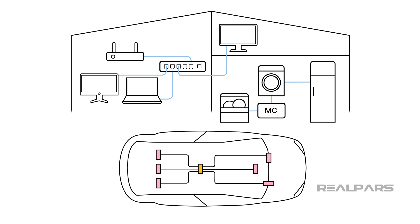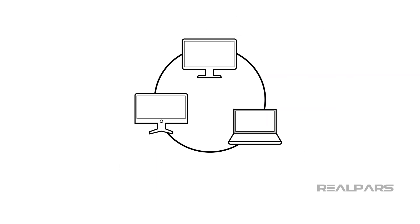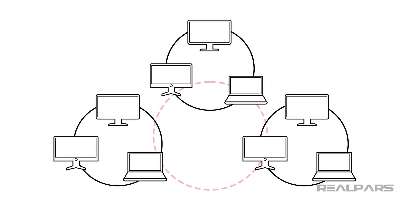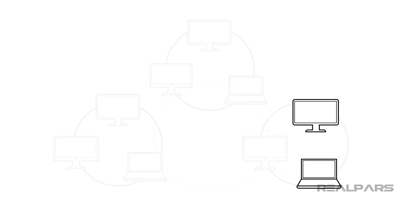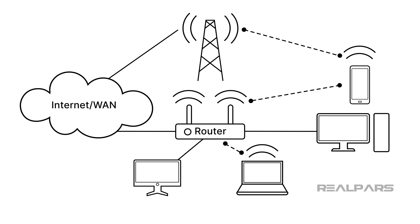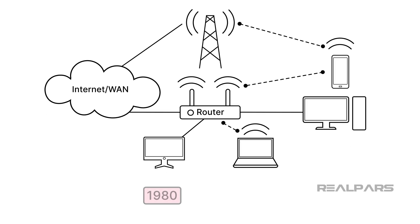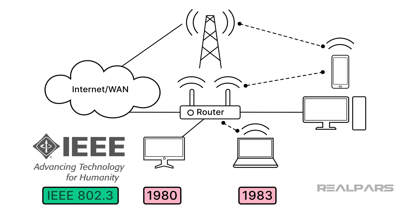But what is Ethernet? Ethernet is a family of computer networking technologies commonly used in local area networks and wide area networks. It was commercially introduced in 1980 and first standardized in 1983 by the Institute of Electrical and Electronics Engineers as IEEE 802.3.